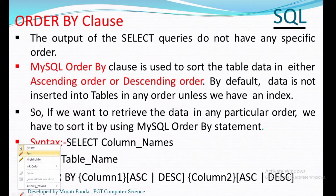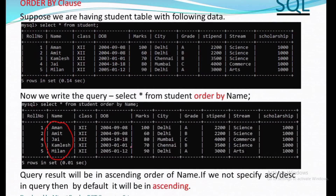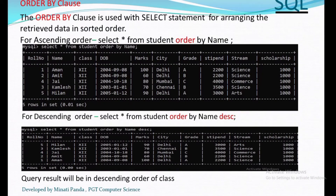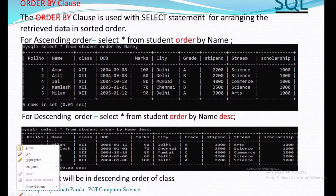Now we will discuss with some examples. Here we are using the student table, which has five entries. As you can see, the names are not in any alphabetical order. Writing SELECT * FROM student ORDER BY name will arrange all data in alphabetical order of name — starting with A and ending with M. By default it will be in ascending order, as ascending or descending has not been specified.